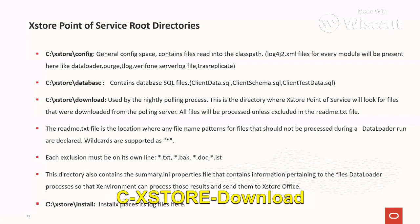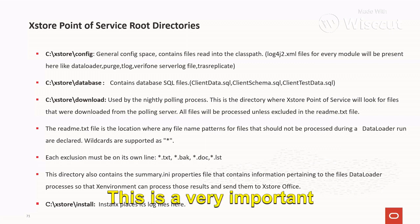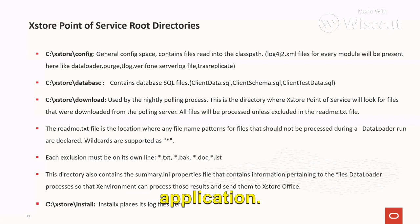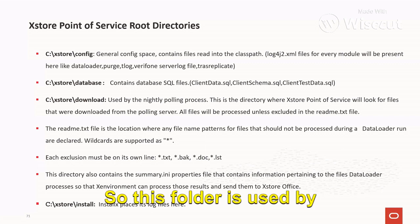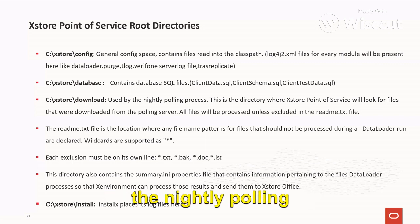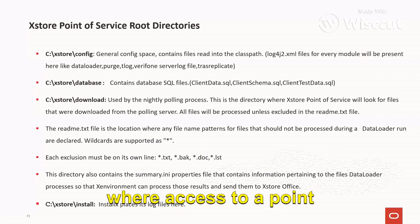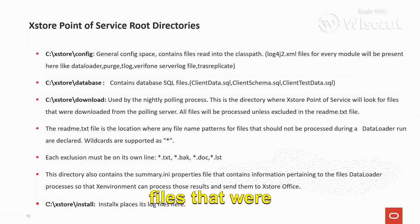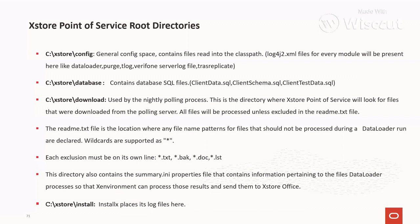Another is the C:\AccessStore\download folder. This is a very important folder with respect to data loading into the access station. This folder is used by the nightly polling process. This is the directory where Access Store point of service will look for files that were downloaded from the polling server, and all files will be processed in some folder available.